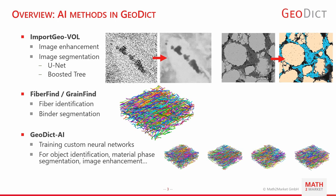In FiberFind and GrainFind we have both fiber identification and binder segmentation powered by deep learning as well. And last but not least we have the GeoDict AI module, which primarily allows you to train your own custom neural networks for all of the other features — that is for object identification, material phase and binder segmentation, and for image enhancement.